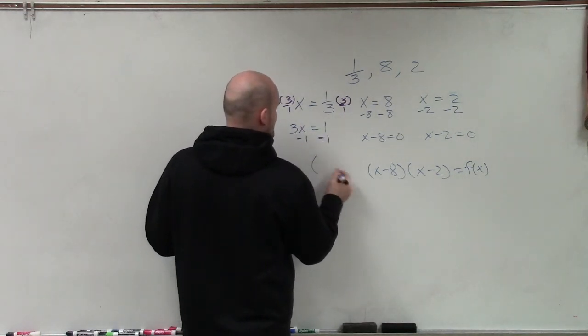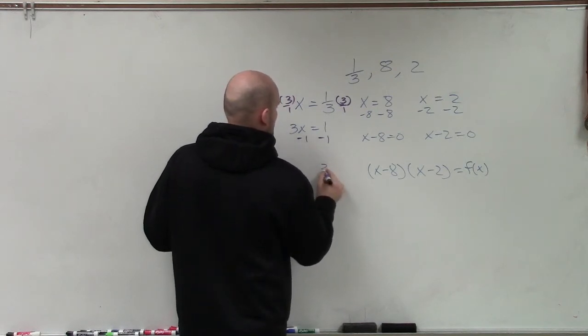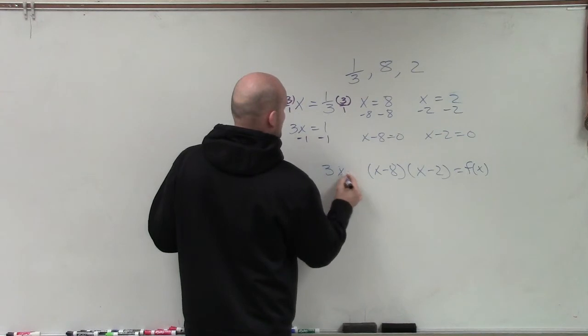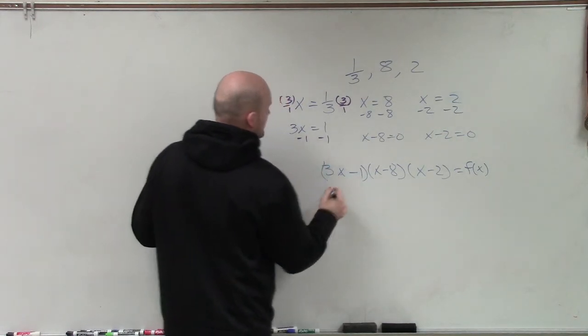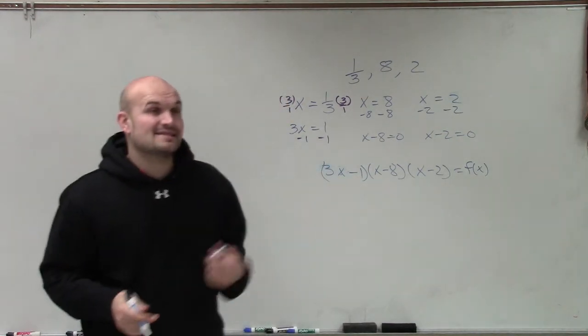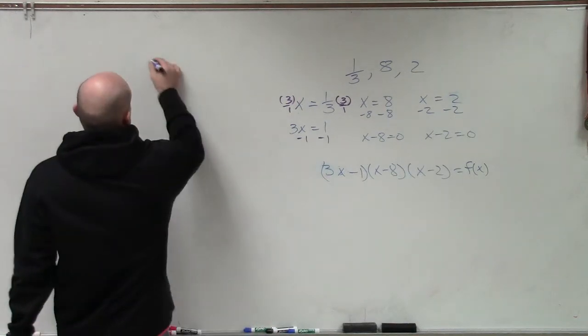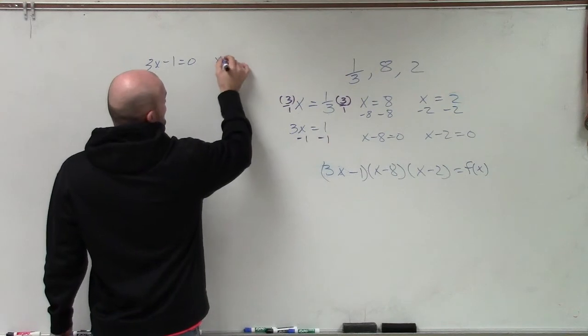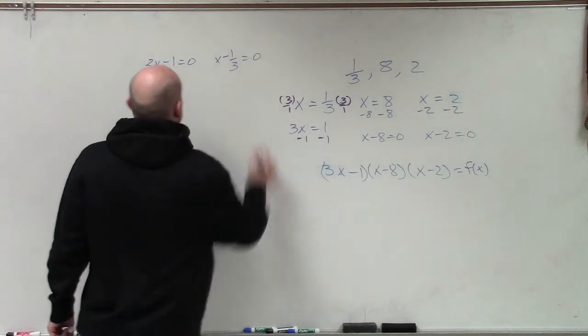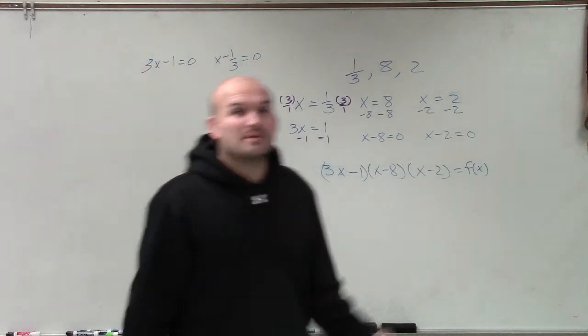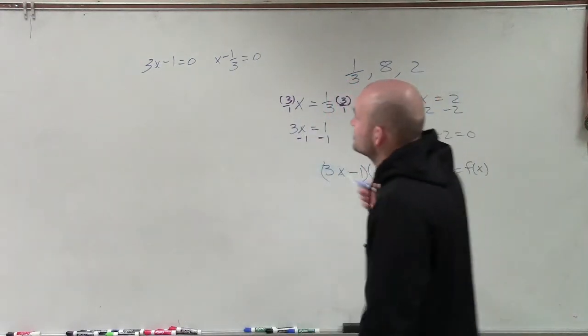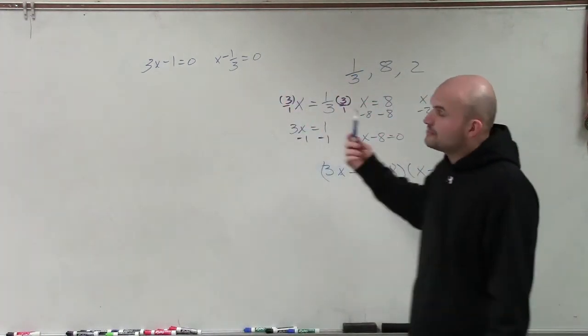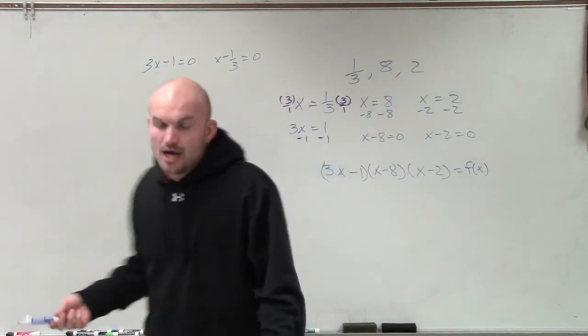So therefore, now my factor is 3x minus 1. So you can see 3x minus 1 is the same thing or 3x minus 1 equals 0 is the same thing as x minus 1/3 equals 0, right? It's the exact same thing, but the factors are different because now this is going to give me a factor, though that when I multiply this, I'm going to have integer coefficients.